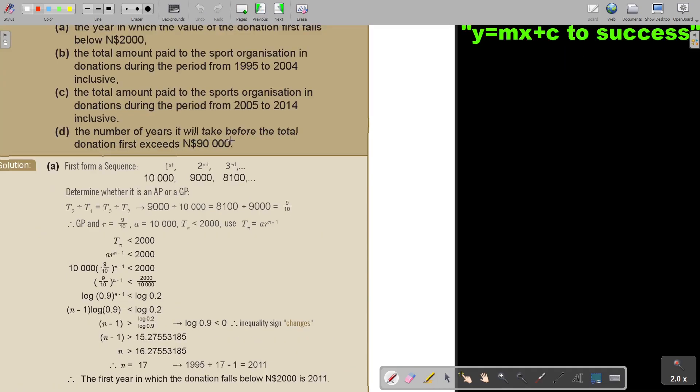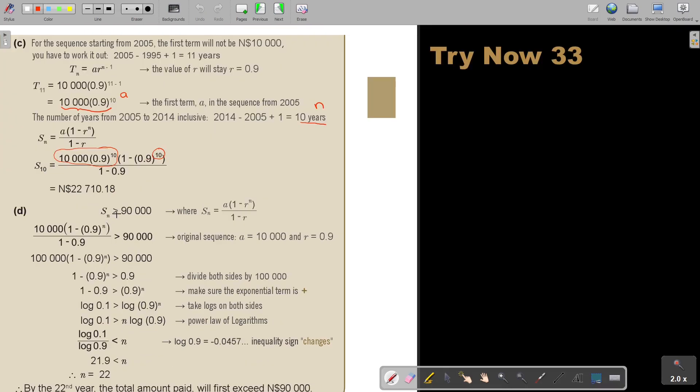The number of years it will take before the total exceeds 90,000. That was only in the year, so it was TN. But this is the total, so that means SN will exceed, will be bigger than 90,000. So SN is bigger than that, so I'm just going to start filling it in. So this is the value, because it's the whole sequence, so it starts now again at 10,000. Bigger than that, and I just simplify, and I take, in this case, I just swap it. I just took that one over to make it positive.